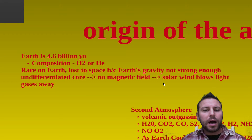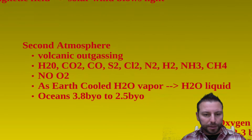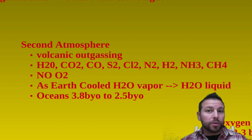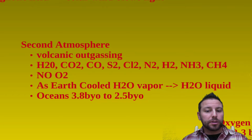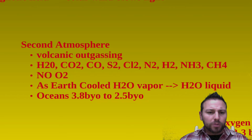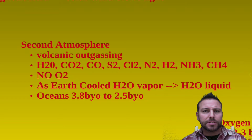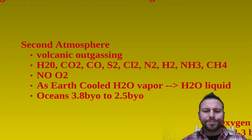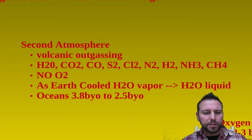A little time had to go by before we saw our second atmosphere forming. Our second atmosphere came from gases that were trapped within the Earth. As things were cooling, those gases came out. Volcanic outgassing really helped develop our atmosphere, giving us water, carbon dioxide, carbon monoxide, sulfur compounds, chlorine, nitrogen, hydrogen, ammonia, and methane. All these gases were being outgassed.